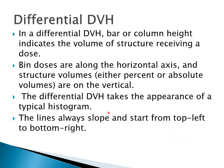In a differential DVH, the bar or column height indicates the volume of structure receiving the dose. Bins are along the horizontal axis and the structural volume is on the vertical axis. The differential DVH takes the appearance of a typical histogram. The line always slopes from top to bottom. Differential DVH is usually used to check the heterogeneity inside the volume or inside the OAR.